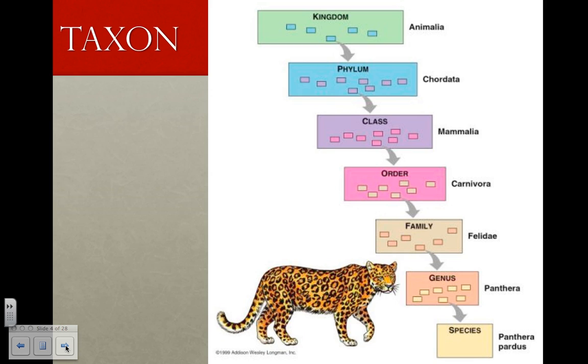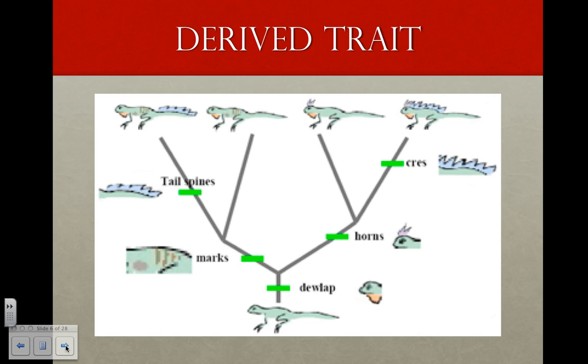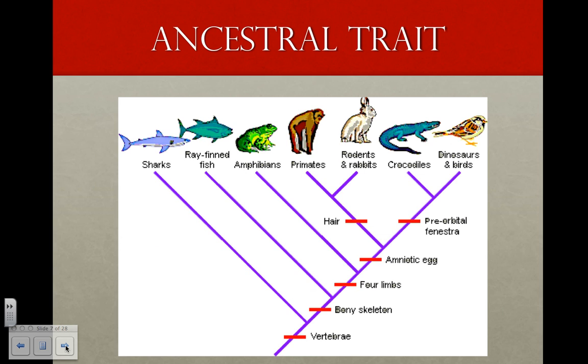Taxa include humans, primates, mammals, and vertebrates. Any taxon that includes all of the evolutionary descendants of a common ancestor is called a clade. A trait that differs from its ancestral form is called a derived trait. Conversely, a trait that was present in the ancestor of a group is known as an ancestral trait for that group.